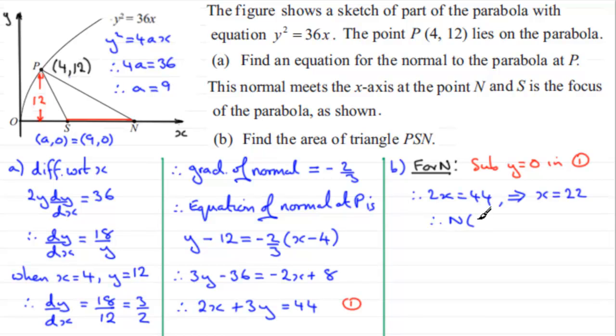So we've got our coordinates for N. Therefore N has coordinates 22, 0. So we know that this point here has coordinates 22, 0. So what does it make that length? It means that therefore SN is going to be 22 take away 9, which is 13. So we've got that distance as being 13 units.